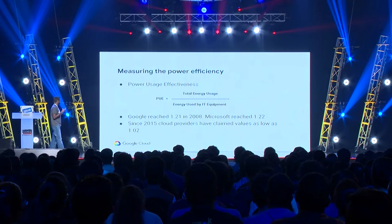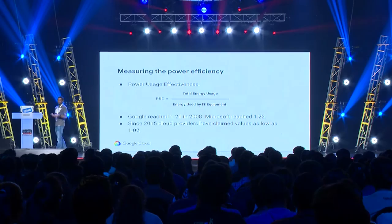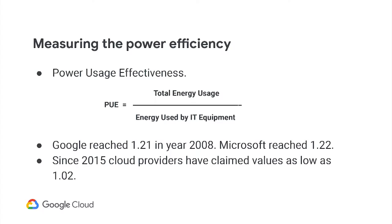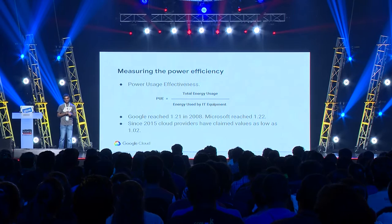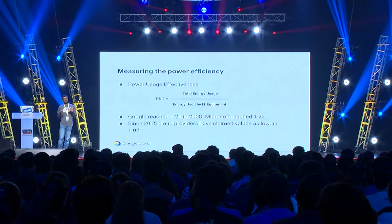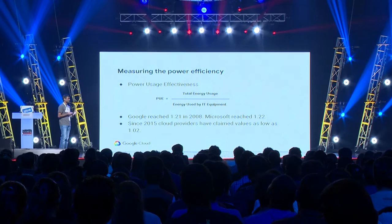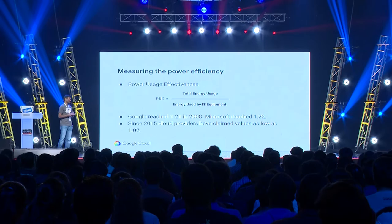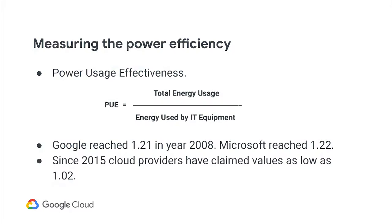How do you measure power efficiency? The most popular metric is PUE — Power Usage Effectiveness — the ratio between the total energy intake of the data center and the energy spent on IT equipment. Ideally this ratio is 1, but in reality you must also spend energy on cooling, so the actual PUE is higher than 1. About 10 years ago, a PUE around 2 was considered good — the gold standard. In 2008, Google made a breakthrough by reaching 1.21, and Microsoft reached 1.22 around the same time. These days, cloud providers report values as low as 1.02.